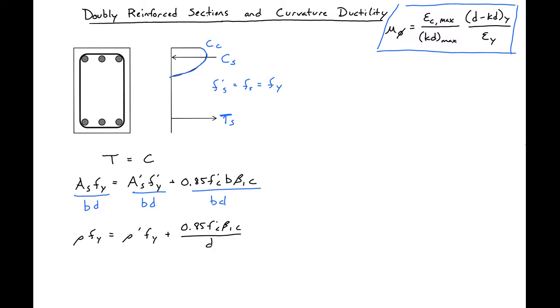We can then solve for C, and we'll get our C equal to rho minus rho prime times FY D divided by 0.85 F prime C beta 1. So this is now our C value.